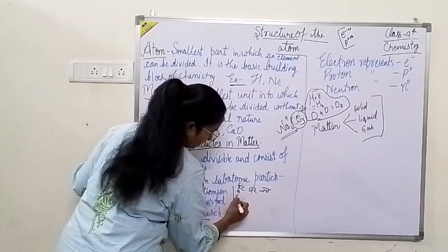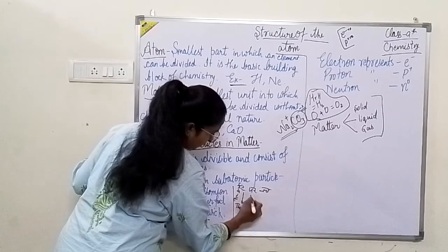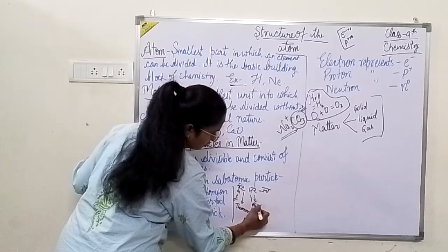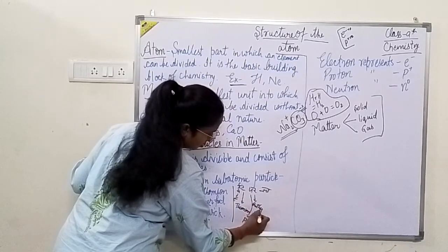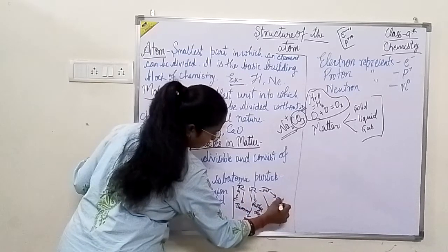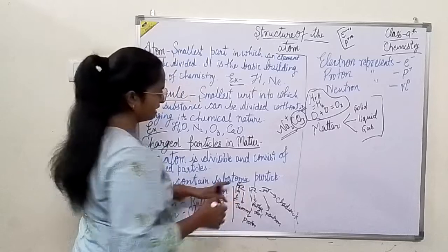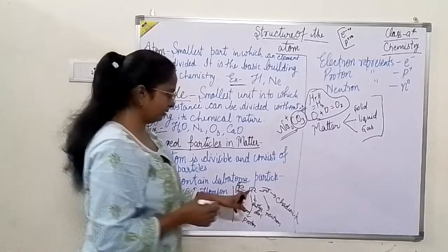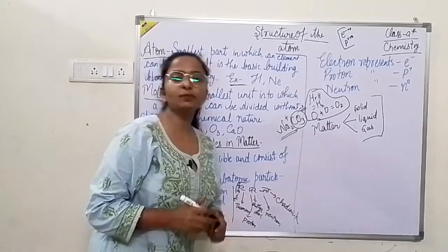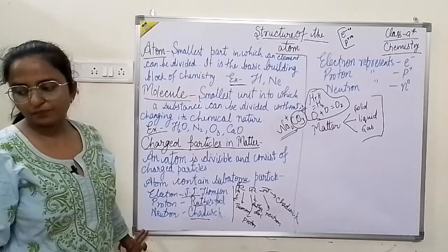E से हो गया Electron, T से हो गया Thomson, P से हो गया Proton, R से हो गया Rutherford, और N से हो गया Neutron। तो Electron के लिए E से Electron, T से Thomson, P से Proton, R से Rutherford, N से Neutron — यह हमारा trick है इन scientists को याद करने का।